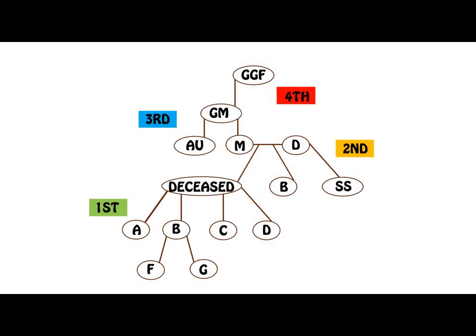This diagram illustrates the degree of relationship in the collateral line. Each generation is a degree. A father and son would be related in the first degree; a grandfather and a grandson would be related in the second degree. If we were to look at the children of the deceased — A, B, C and D — if B was to have two children, F and G, then F and G would be related to B in the first degree as a father-son relationship. However, F and G would be related to the deceased in the second degree, as the deceased would be the grandfather of F and G.